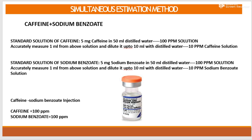To start with preparation of standard solutions of caffeine as well as sodium benzoate: to prepare caffeine solution, 5 mg of caffeine powder is dissolved in 50 ml of distilled water to get a 100 ppm solution of caffeine. From this 100 ppm solution, 1 ml is withdrawn and diluted up to 10 ml with distilled water to get a 10 ppm caffeine solution.